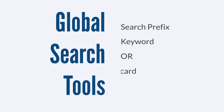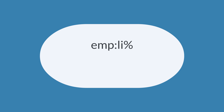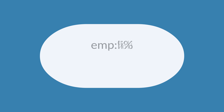The percent wildcard is another search tool and it tells NetSuite how to search for the information in your keyword. Placing percent directly after your keyword will instruct NetSuite to return only results that begin with your keyword. Placing percent directly before your keyword, on the other hand, will instruct NetSuite to return any results that contain your keyword.